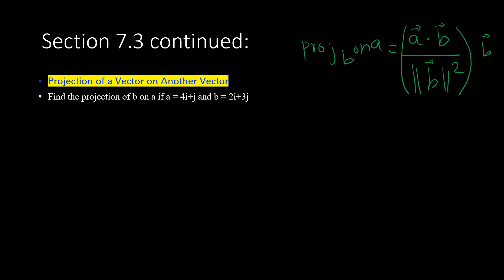Now let's do a problem. Find the projection of B on A, given vector A which is 4i + 1j and B which is 2i + 3j. We need to find the projection of B on A, so we're going to use this formula. First we're going to find the dot product A dot B, which equals 4 times 2 plus 1 times 3.